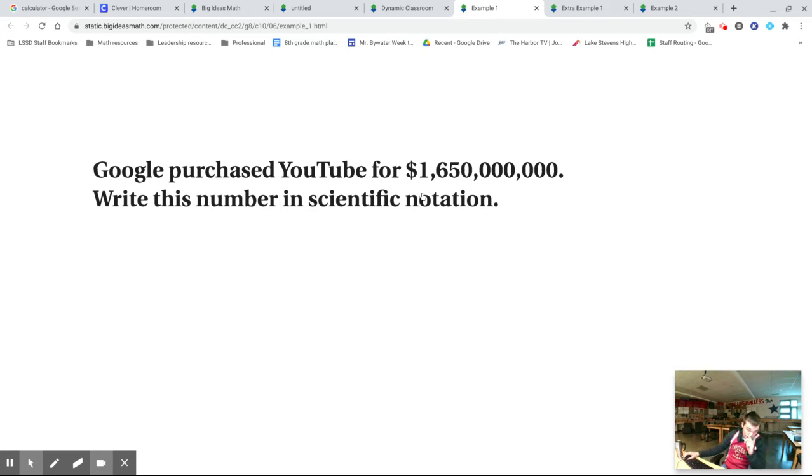So I see this decimal, it's all the way at the end of the number. I want to slide it all the way over here so that I have 1.65, because that's between 1 and 10.